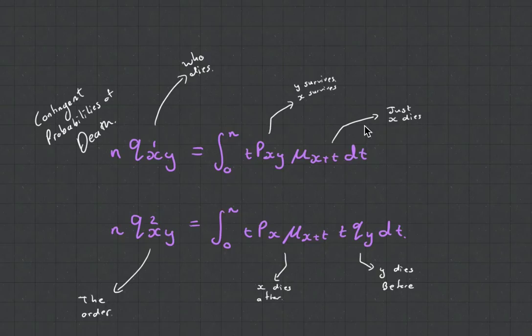So the integral is we sum from zero to time N, and what we're saying is we're going to be summing up all the times where both of these guys survive, and then when just X dies.